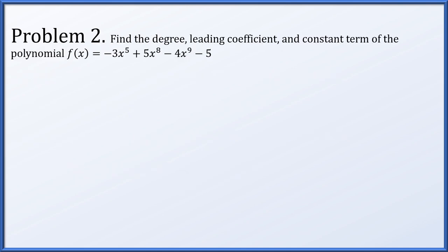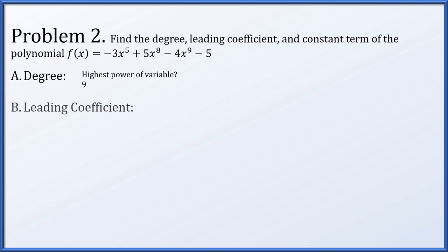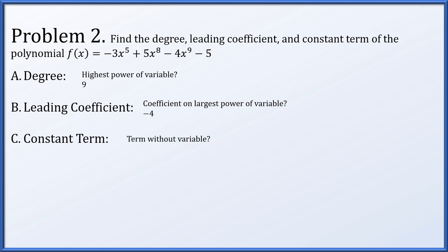For problem two, find the degree, leading coefficient, and constant term of f(x) = −3x⁵ + 5x⁸ − 4x⁹ − 5. The degree is the largest power of the variable; we see x to the ninth, so it is degree 9. The leading coefficient is negative 4, the coefficient on x to the ninth. The constant term — the term without a variable — is negative 5.